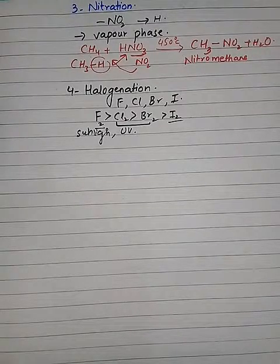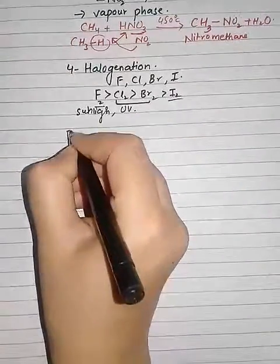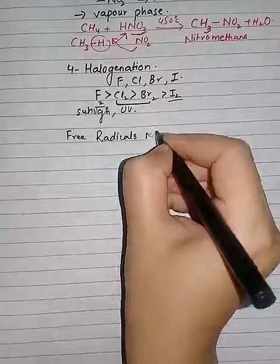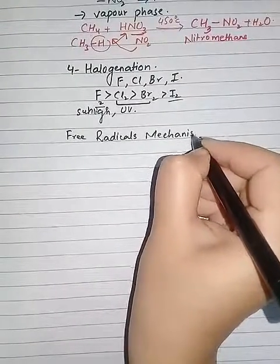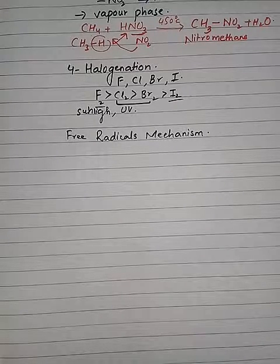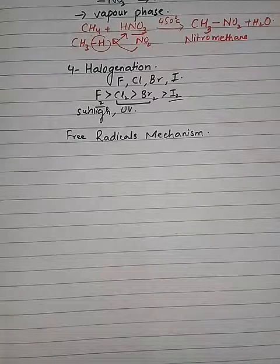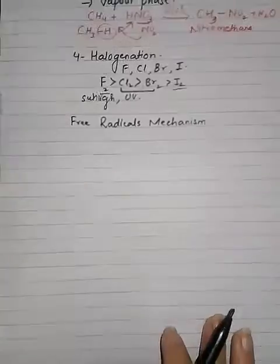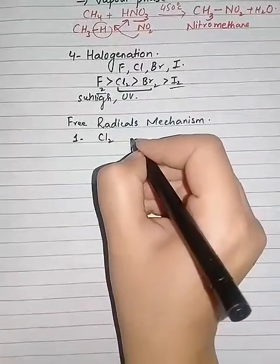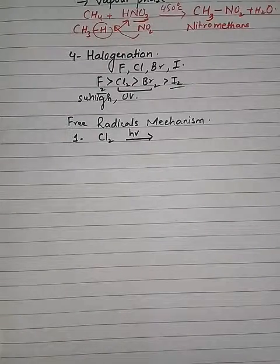Halogenation proceeds through free radical mechanism. Radicals are very reactive species that attack and result in the formation of more and more radicals. Free radical mechanism involves three steps. The first step is initiation, where the chlorine molecule is broken down in the presence of high energy lights like sunlight or ultraviolet rays and it will be converted into chlorine radicals.